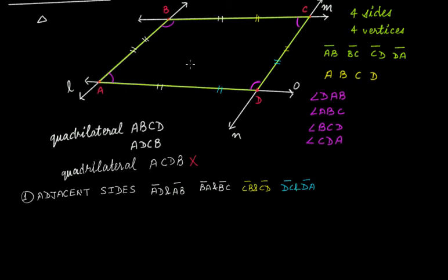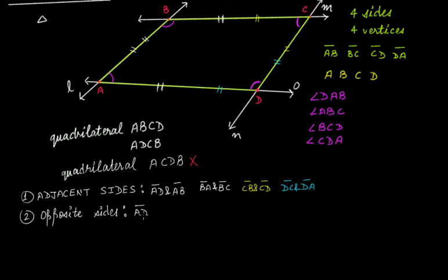Now, what about opposite sides? Opposite sides are those sides which are not adjacent. So in this case, AD and BC are opposite sides, and AB and CD are opposite sides.